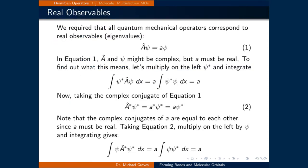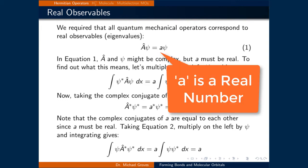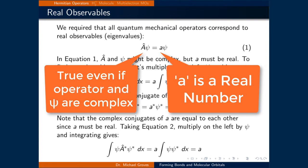Recall that we required that all quantum mechanical operators correspond to a real observable. This means that the eigenvalues produced when the corresponding operator is applied to a wave function are real numbers.